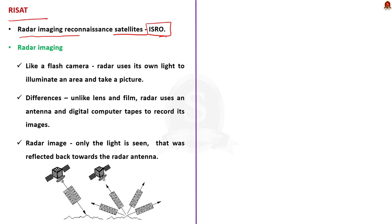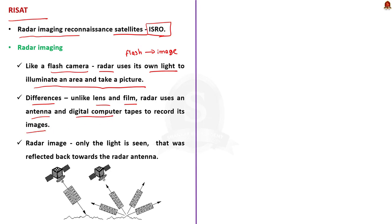Radar imaging uses radar technology to take pictures, working the same as a flash camera. A flash camera sends out a pulse of light and records the reflected light through a camera lens. Similarly, radar uses its own light to illuminate an area on the ground and take a snapshot. However, instead of a lens and film, radar uses an antenna and digital computer tapes to record images. In a radar image, we can see only the light reflected back towards the antenna, not a clear image like a camera.